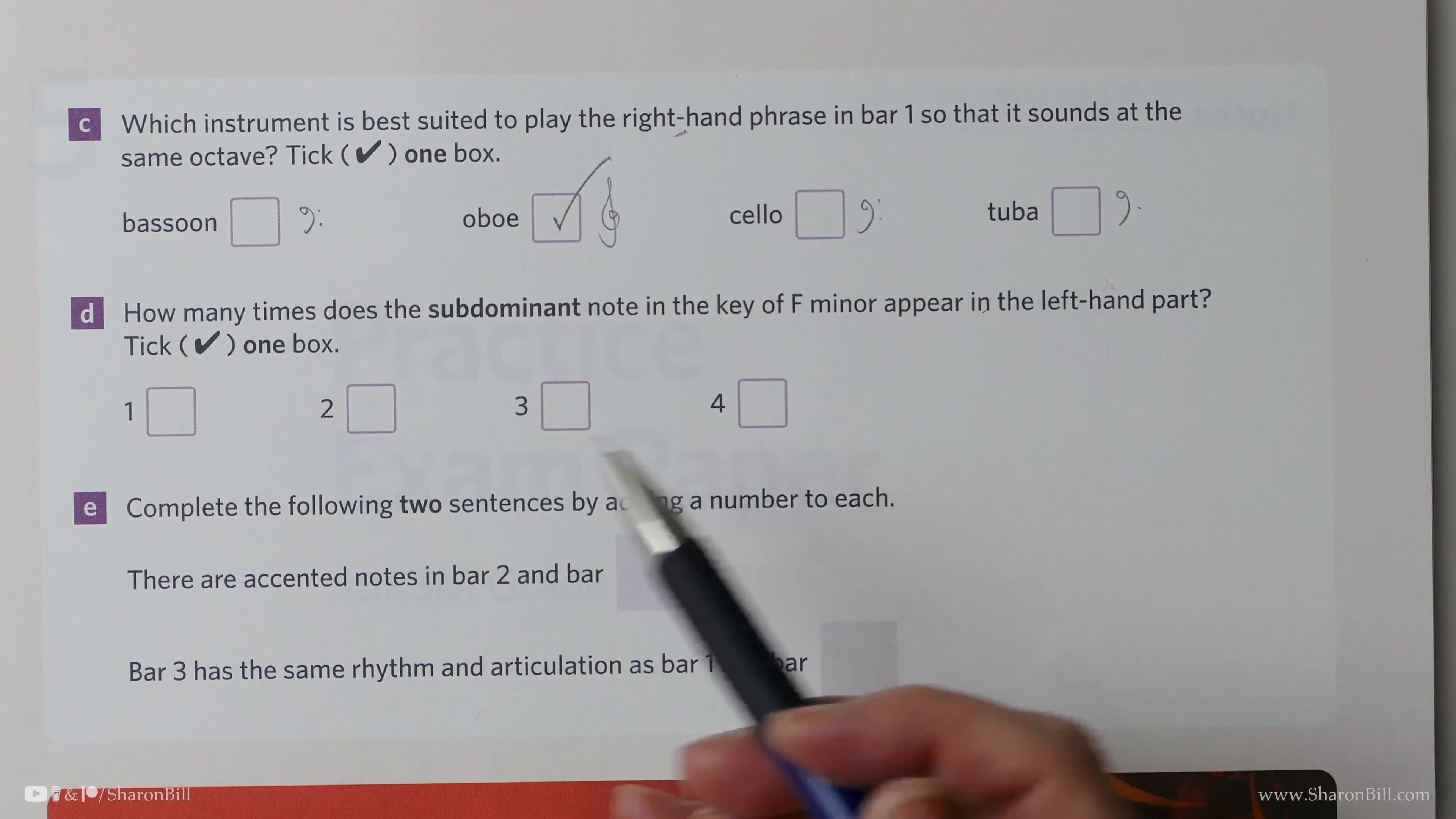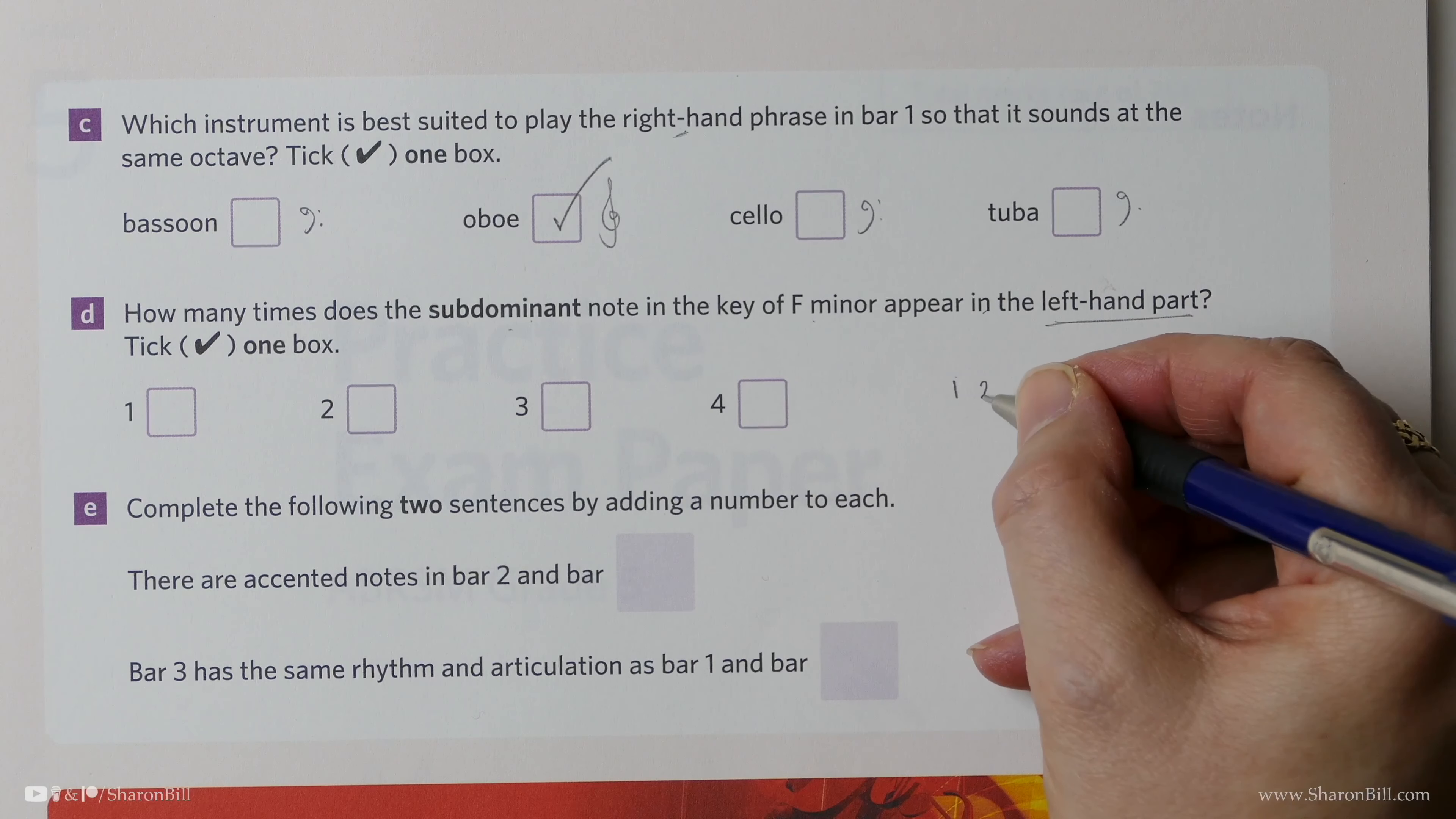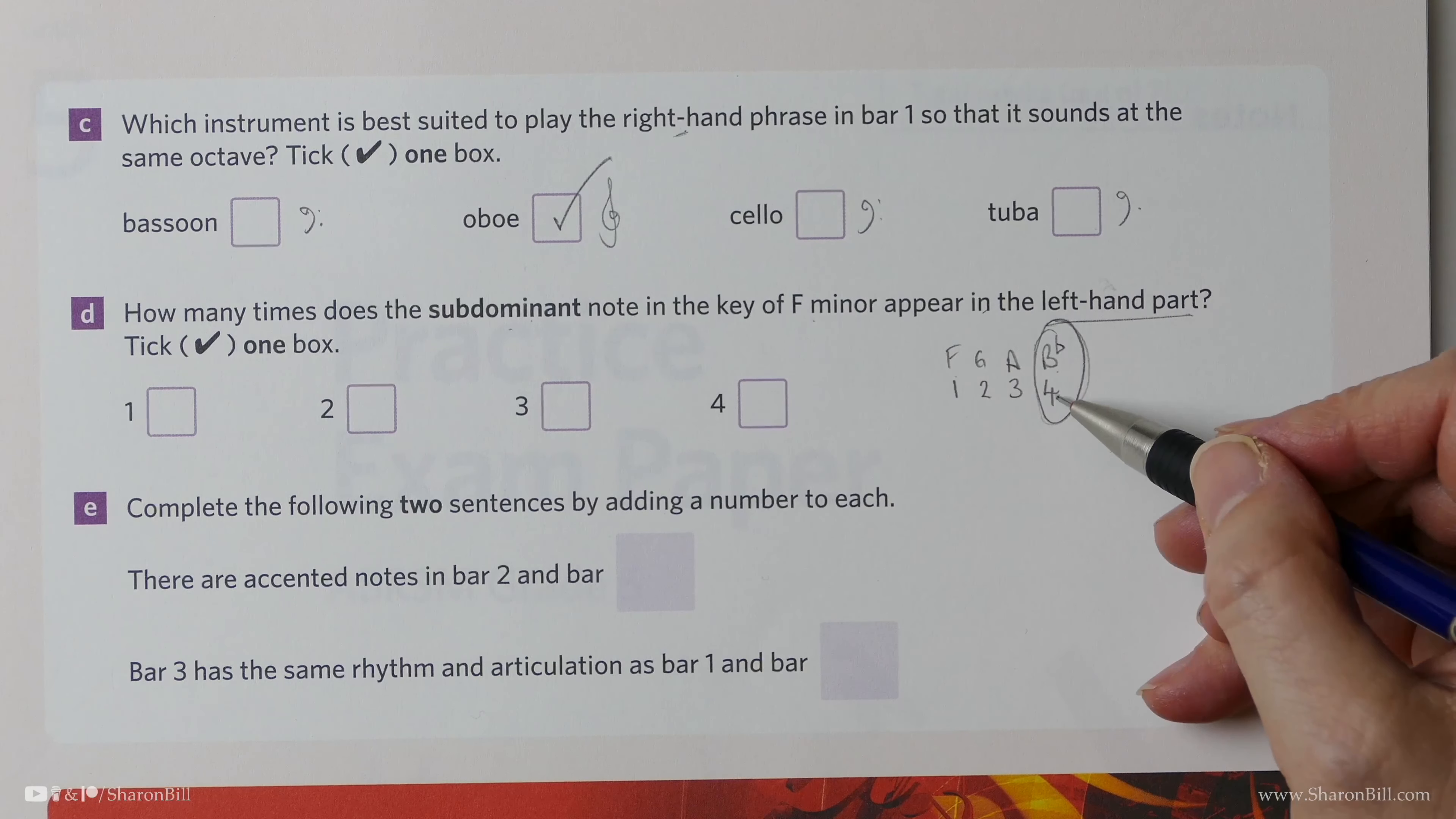We're asked how many times the subdominant note of the key of F minor appears in the left hand part. The subdominant is the fourth degree of the scale: one, two, three, four. If we're in F minor—F, G, A, B—it's a B-flat because of the key signature. We're looking in the left hand part for the note B-flat in any octave.